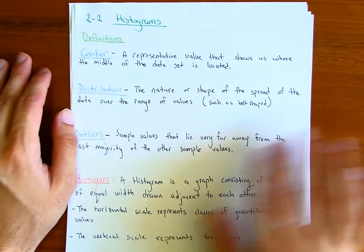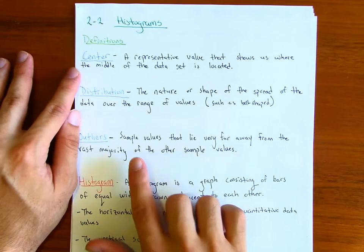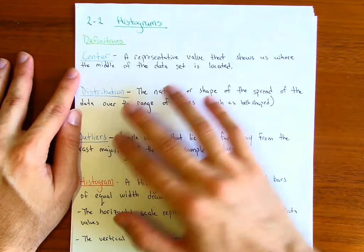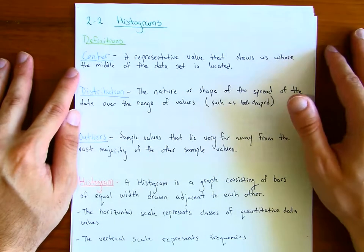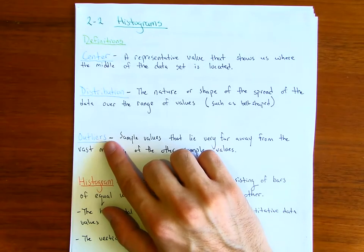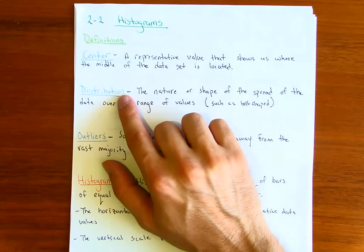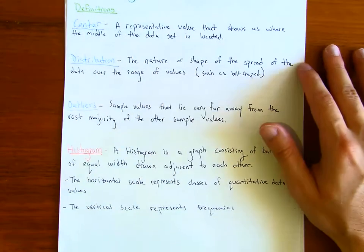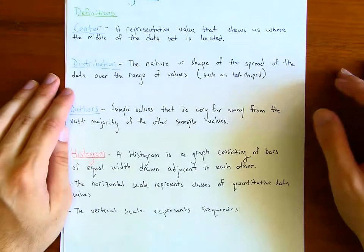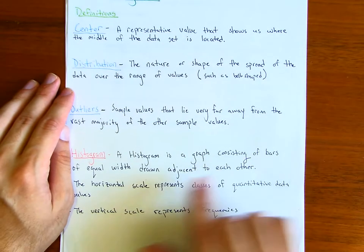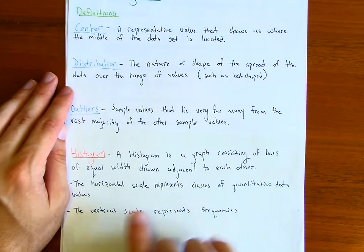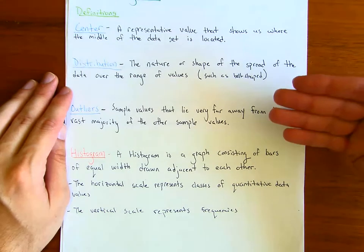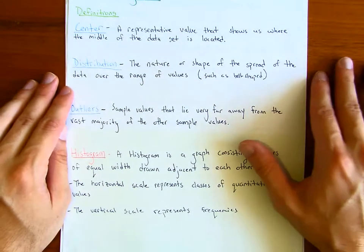Outliers are sample values that lie very far away from the vast majority of other sample values. Through the lesson I'll go through these definitions more through examples. A histogram is a bar graph consisting of bars of equal width drawn adjacent to each other. The horizontal scale measures the classes of quantitative data, while the vertical scale represents the frequencies.